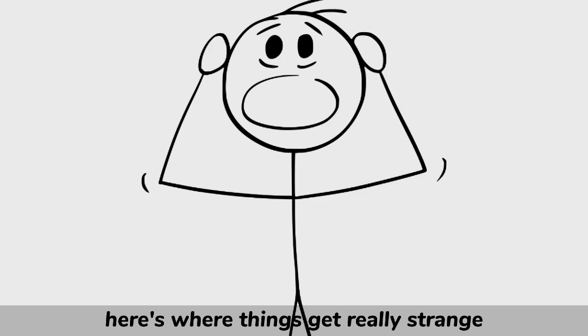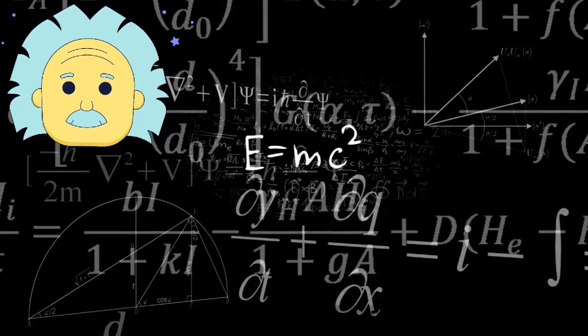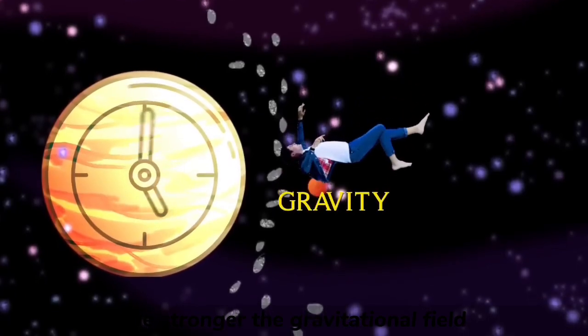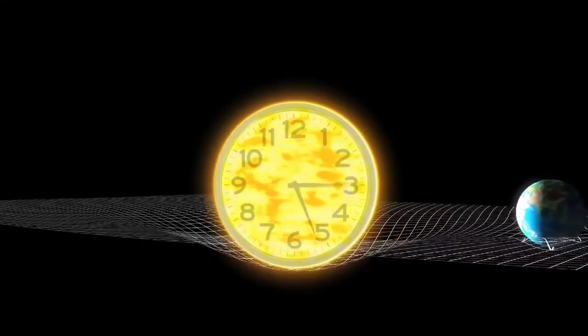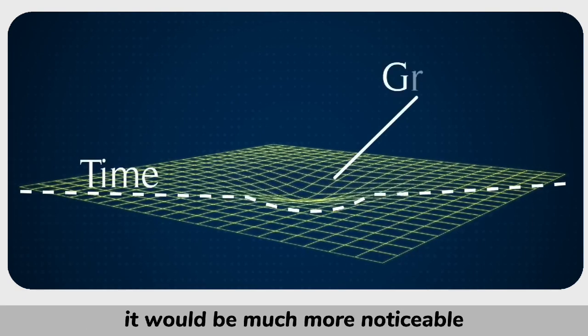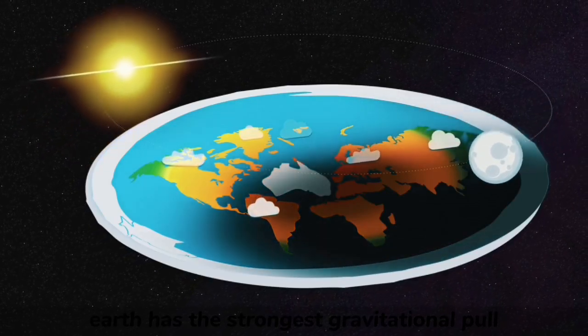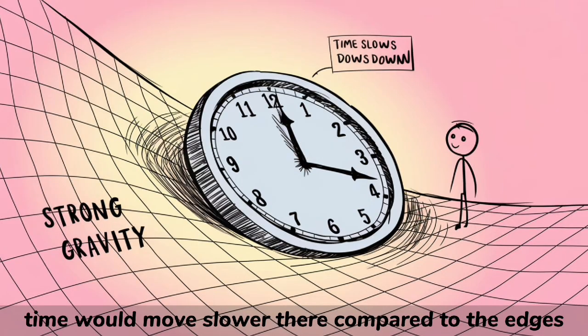Here's where things get really strange. In Einstein's theory of relativity, gravity affects time itself. The stronger the gravitational field, the slower time moves. On our spherical Earth, this effect is tiny, but on a disk-shaped planet, it would be much more noticeable. Since the center of pizza Earth has the strongest gravitational pull, time would move slower there compared to the edges.